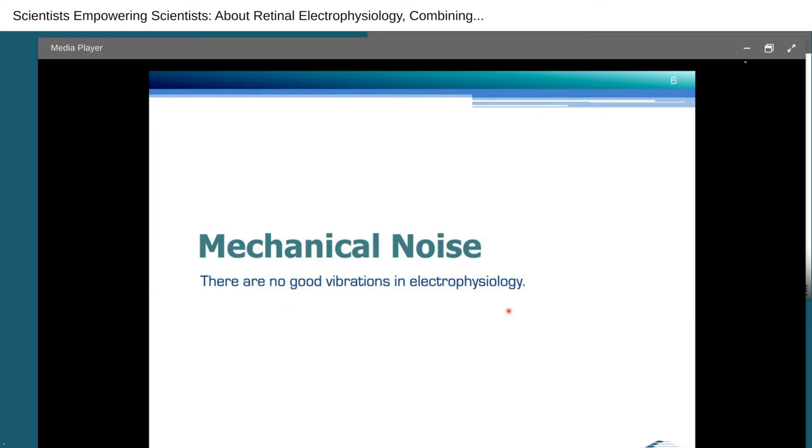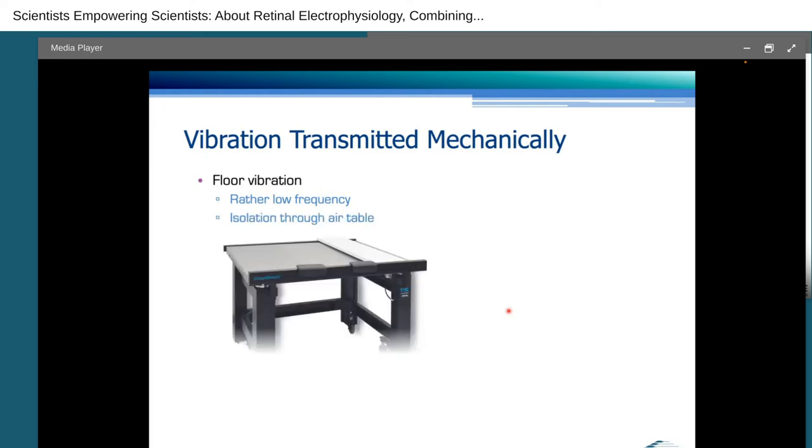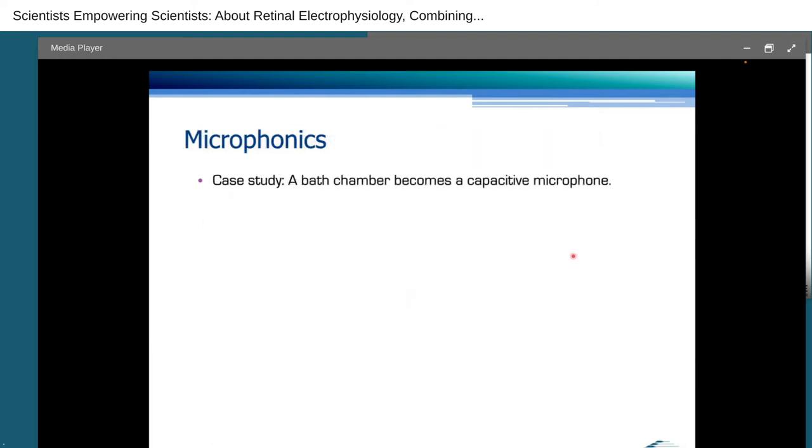Let's switch over to mechanical noise. There is no such thing as good vibes in electrophysiology. Vibration is usually transmitted mechanically, either via floor vibration, that happens at a rather low frequency, and can be pretty well isolated through using an air table, a tabletop that floats on air dampers, air cushions. Here's the isolation performance. Lower value means lower transmissibility, so better damping. The frequency range that we're looking at here is between 10 and 70 hertz, so relatively low frequency. You can also have mechanical vibration, mechanical noise by fans or other equipment that touches components. I once had a fan duct sitting on the lamp housing of a microscope that gave me a lot of grief, or microphonics, and also that gave me a lot of grief. And that's an anecdote, a case study that I want to elaborate a little further on.